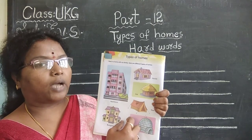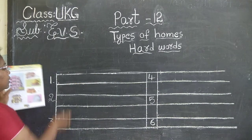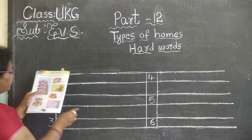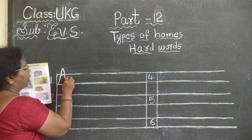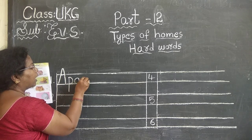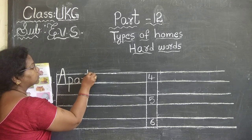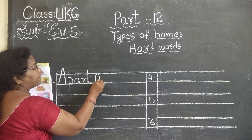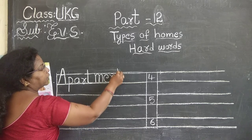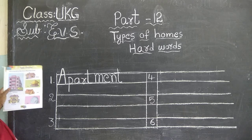Now what is the first word? Apartment. Start writing. Capital A from that. A. P should come down. A-P. A. A-R. T should come from the top. A-P-A-R-T. Apart. M-E-N-T. Apartment. Again from the top. A-P-A-R-T, apart. M-E-N-T, meant. Apartment.